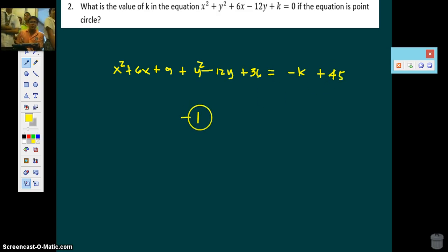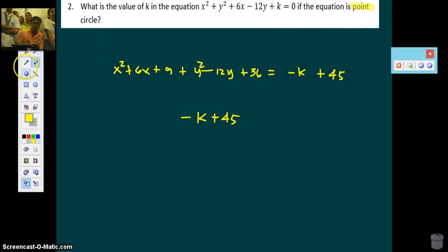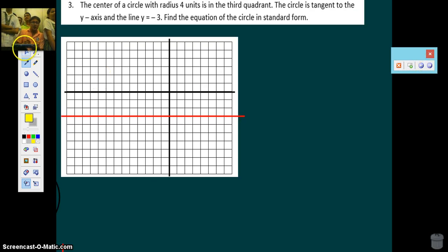So the radius should be zero because this is a point circle. Let's emphasize that. Point circle. So this must be zero. So what is k? k is 45. So that's it. Next.